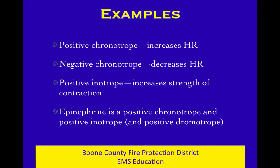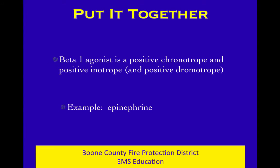Epinephrine — adrenaline — cranks up the speed. It's a sympathetic agonist; it's a beta-1, beta-2, and alpha-1 agonist. It has these effects: positive chronotrope, positive inotrope, positive dromotrope. A beta-1 agonist: positive chronotrope, positive inotrope, positive dromotrope. Example: epinephrine. You'll start seeing these terms in the med cards, and we really need to be good at them.